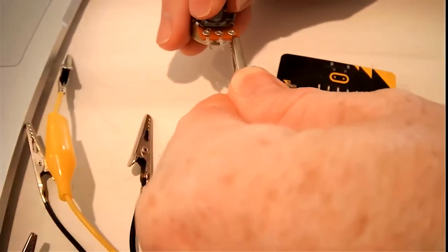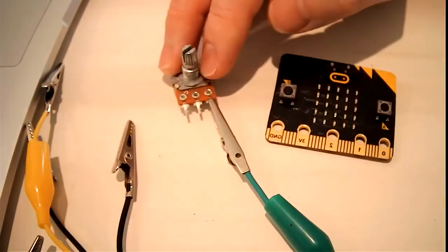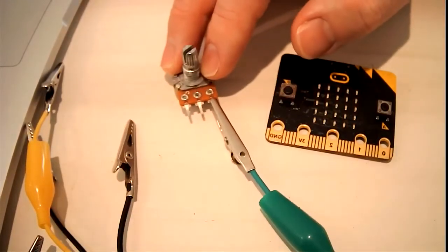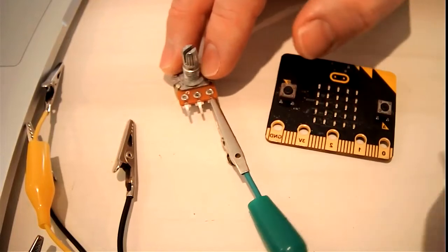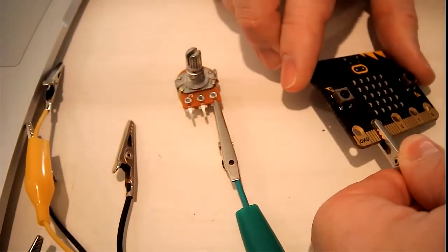It's really important that these make metal to metal contact and that they don't touch other ports as you start adding them. And the far left one is going to go into the three volts of the microbit.